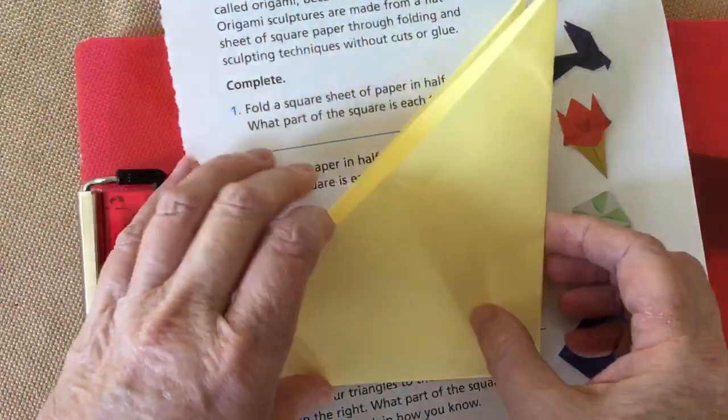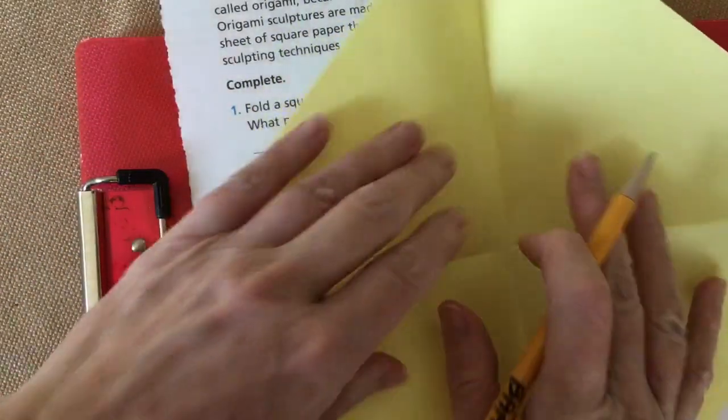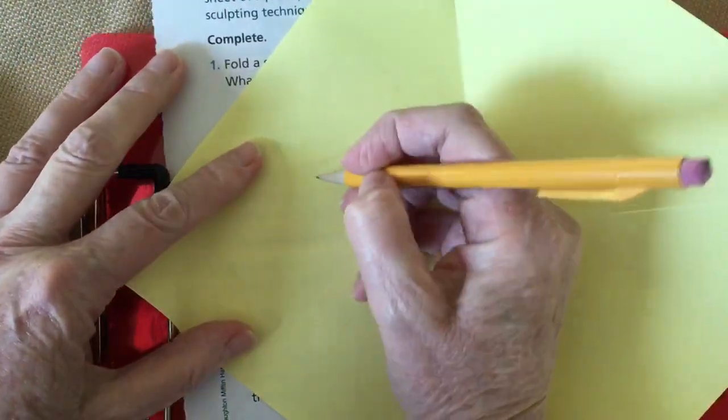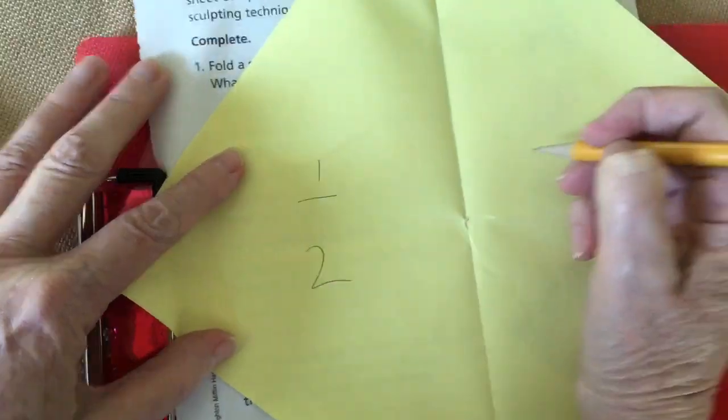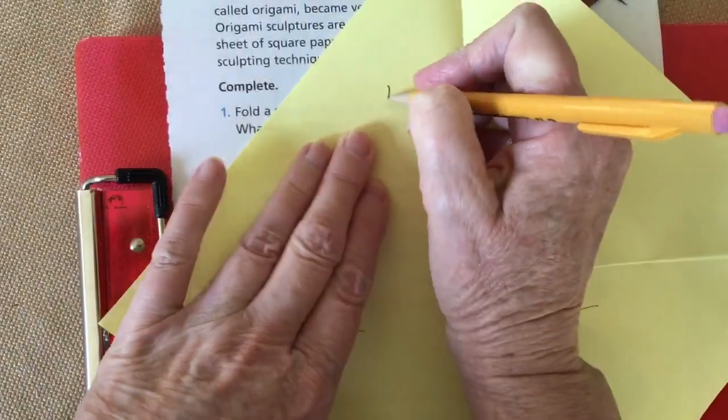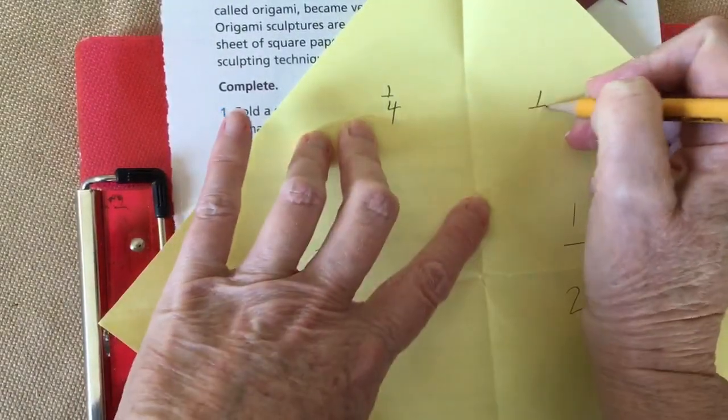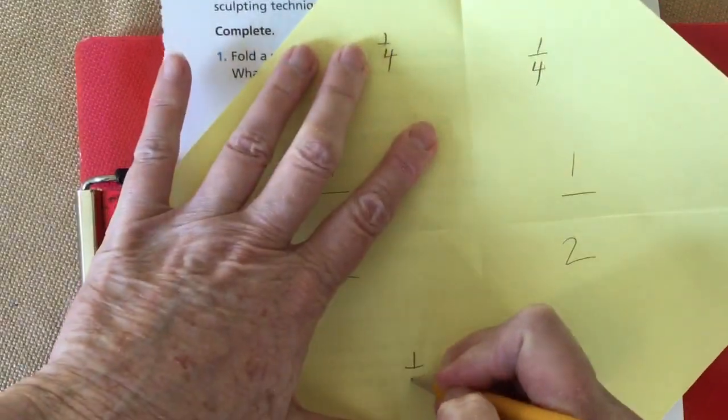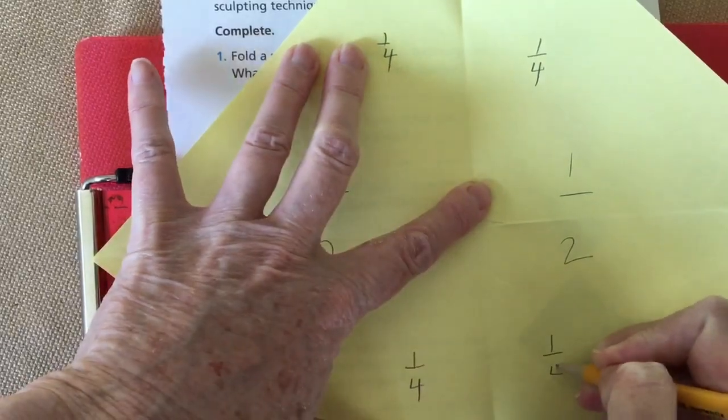Now fold it in half. So that was our first half. Fold it in half again, that gave us quarters. By the way, I hope you're labeling those, boys and girls. If you didn't, I would label that one half, one half, and then we came up with fourths, one fourths.